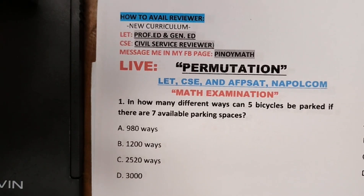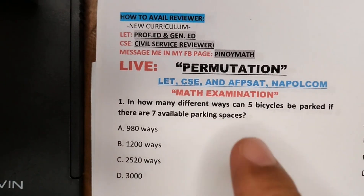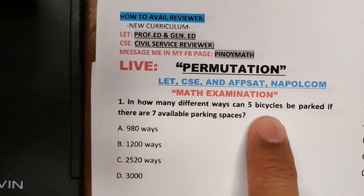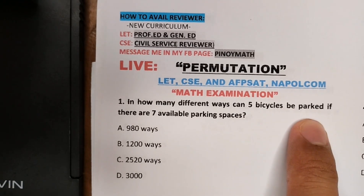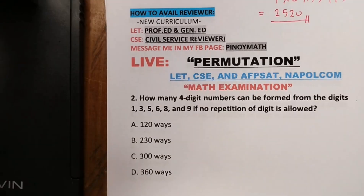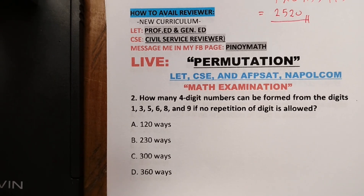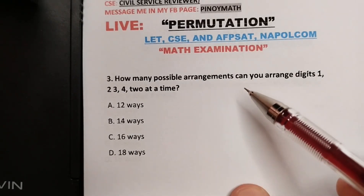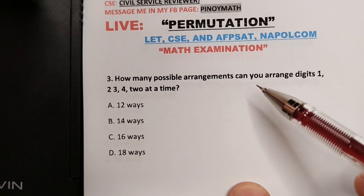The number one question is: in how many different ways can 5 bicycles be parked if there are 7 available parking spaces? Number two question: how many four-digit numbers can be formed from digits 1, 3, 5, 6, 8, and 9 if no repetition of digits is allowed? So how many possible arrangements can you make?